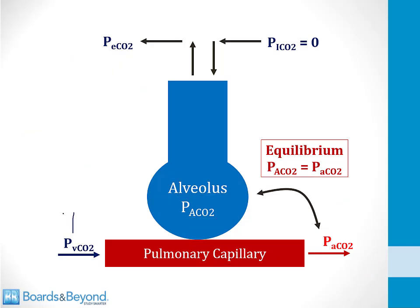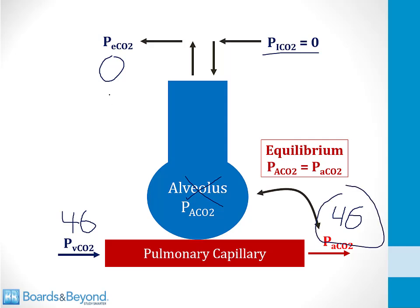Now imagine lungs made up entirely of dead space. Carbon dioxide in inspired air is zero, there's no gas exchange, so expired CO2 would be zero. If you're not expiring any CO2, it builds up in the blood — arterial CO2 will rise to 46 and keep getting higher. So the more dead space you have, the higher your CO2 will get, and the closer your expired CO2 will get to zero.